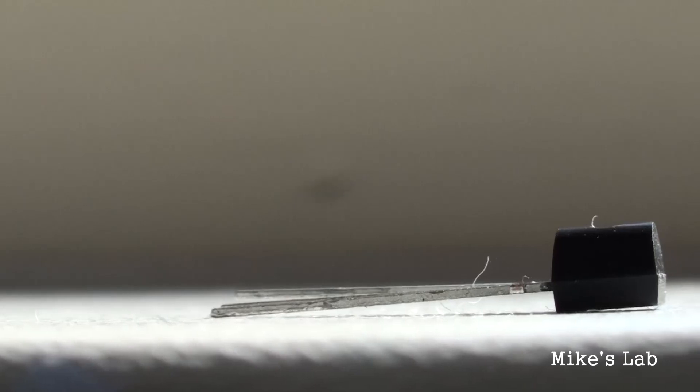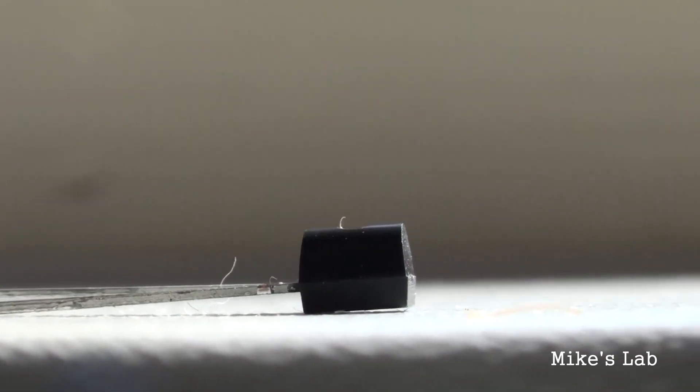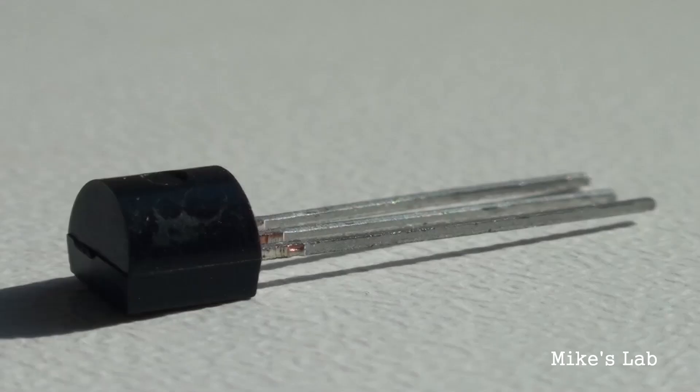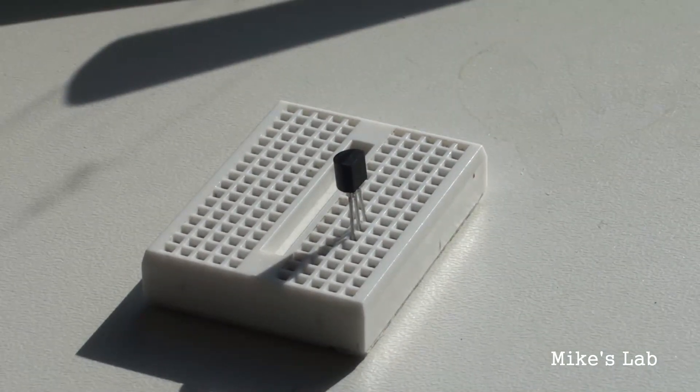A thermistor is a type of resistor, and while most resistors are designed to maintain resistance regardless of temperature, a thermistor's resistance varies as the temperature changes. The resistance of a thermistor decreases linearly when the temperature rises.